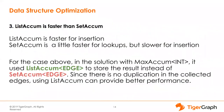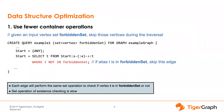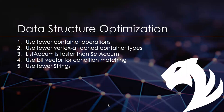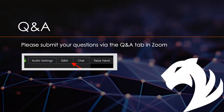To recap: there are five things for data structure optimization. First, use fewer container-type operations — existence checks, populating maps and sets. Second, try to define fewer vertex-attached container types. Third, list-accum is faster than set-accum for insertion. Fourth, use a bit vector for condition matching instead of defining a set of vertices. Fifth, try to use fewer strings and use vertex type or integer types instead if possible.